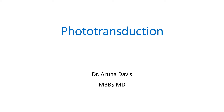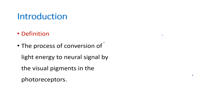In this video we will be discussing phototransduction. When you get this question on the mechanism of phototransduction or Wald's visual cycle, you always have to start with an introduction containing the definition. Phototransduction is a process of conversion of light energy to neural signals by the visual pigments of the photoreceptors.